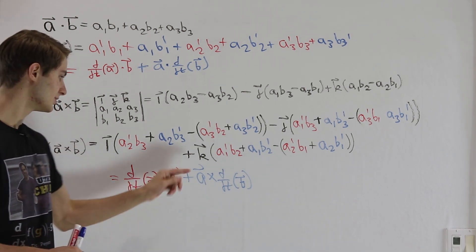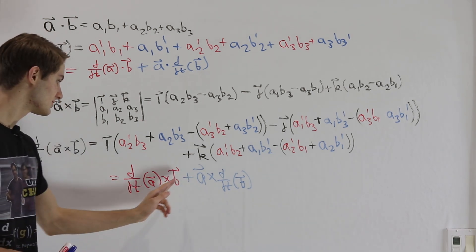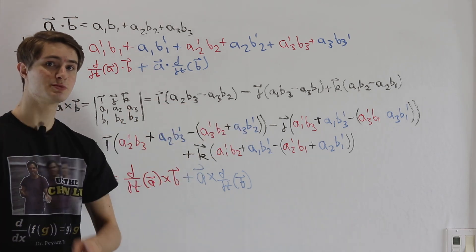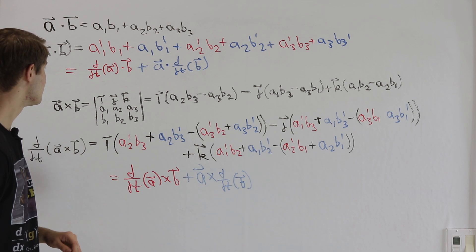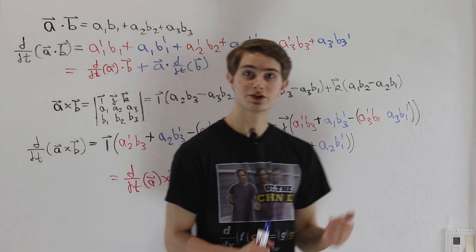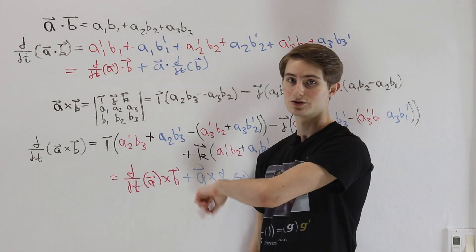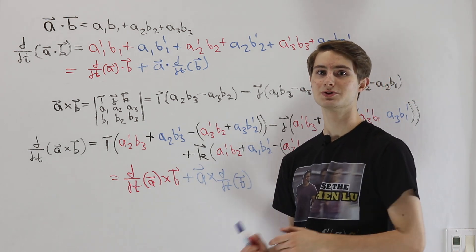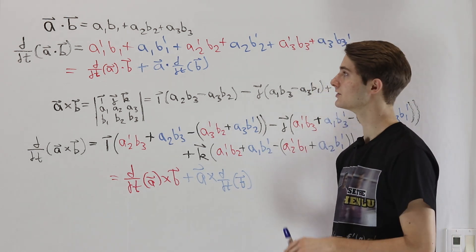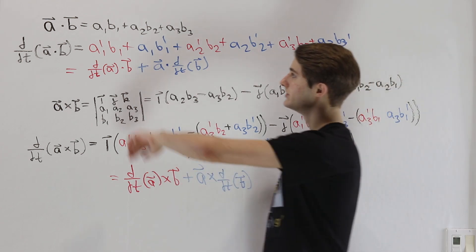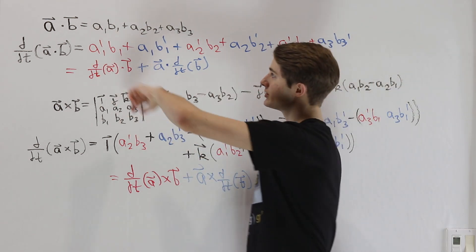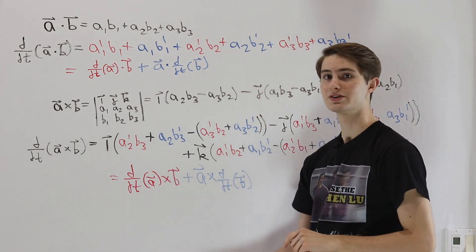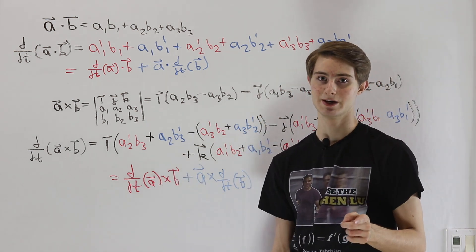Notice in this case, it does matter what order we put the vectors in. The A is always going to come before the B, because when we switch the components of the cross product, that will make it negative. So those are the formulas for the derivatives of the dot product and the cross product, and they function very similarly to the normal product rule when we're looking at ordinary derivatives. The reason behind that is that each of these products is just a bunch of ordinary products of functions added together, and so the product rule is going to function exactly the same way.